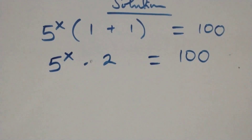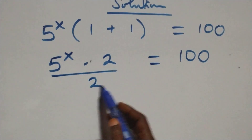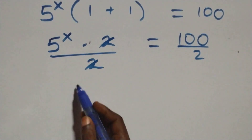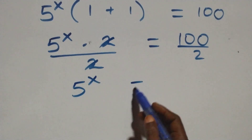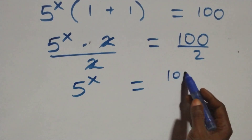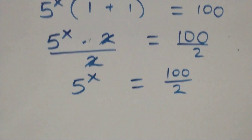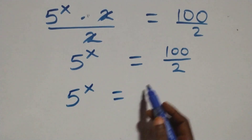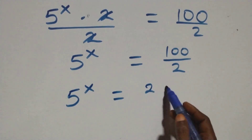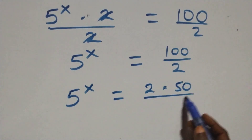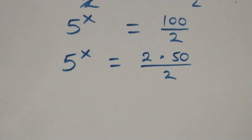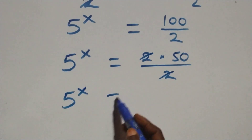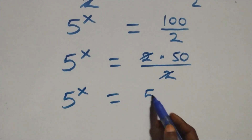The next step: we divide both sides by 2 — divide this side by 2, also divide this side by 2. The two cancels, and we have 5 raised to power x equals to the right-hand side over 2. We can write that as 2 times 50 over 2, so the two cancels and we have 5 raised to power x equals to 50.